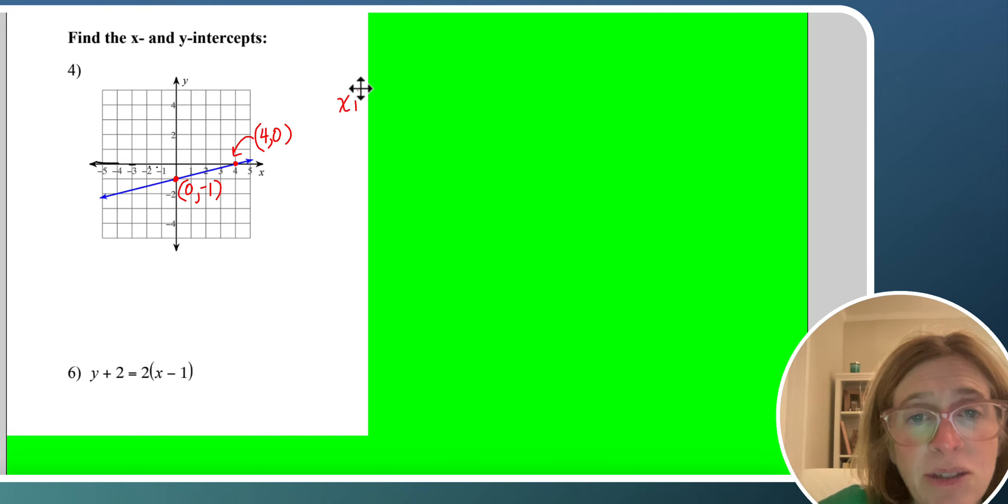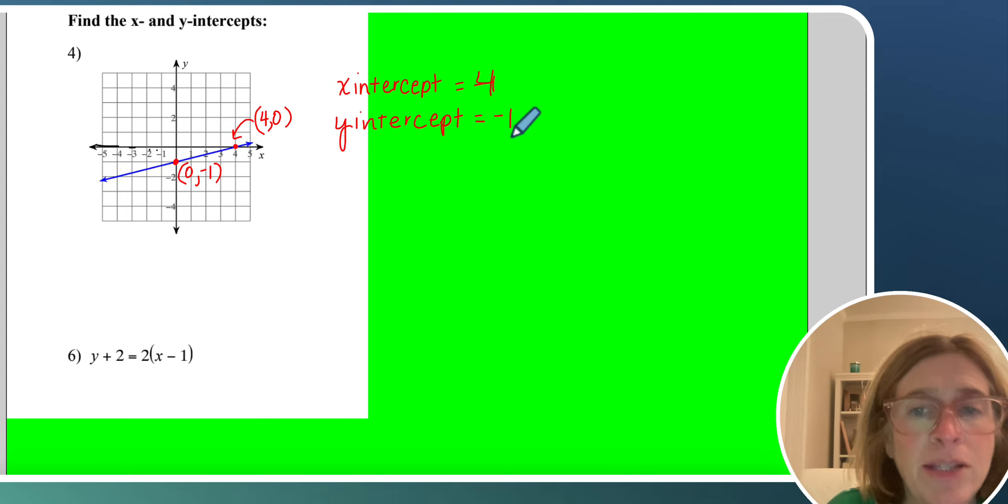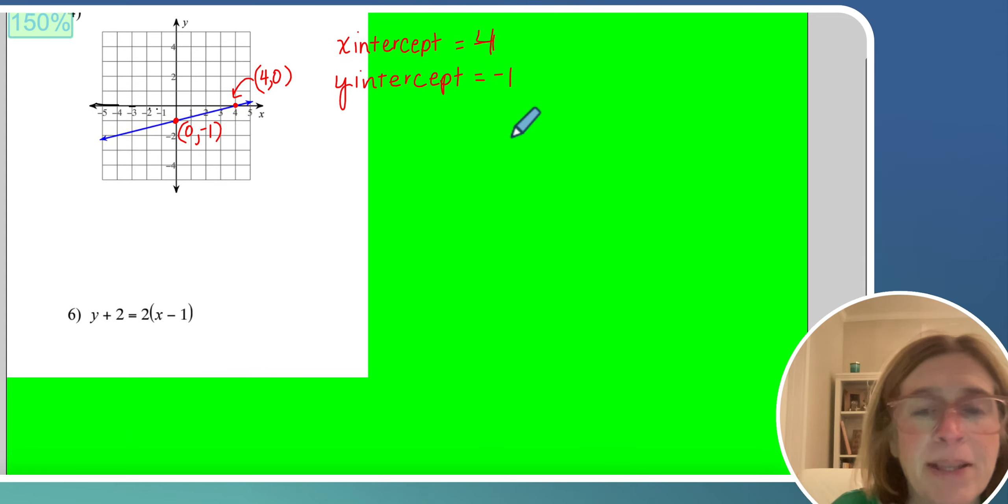So you could write the x intercept, if you wanted to, as 4. And you could write the y intercept, if you wanted to, as negative 1. I tend to write them as ordered pairs, but you don't have to.